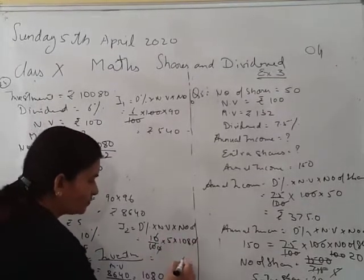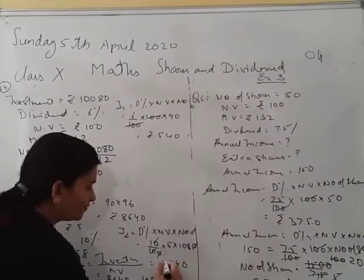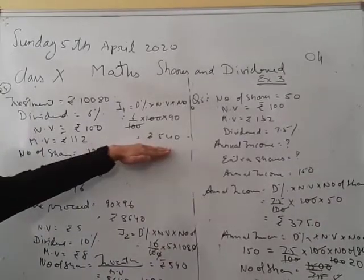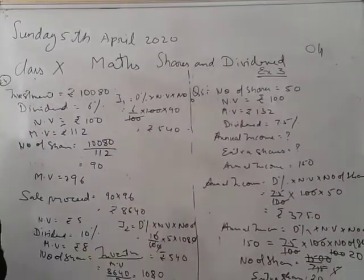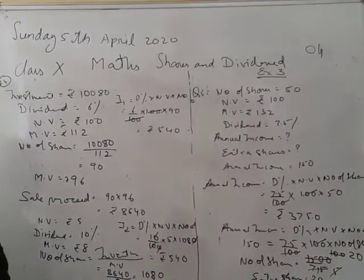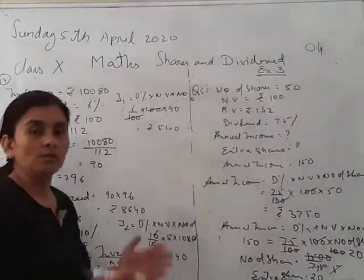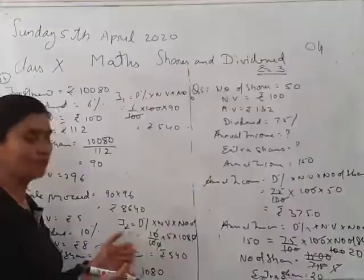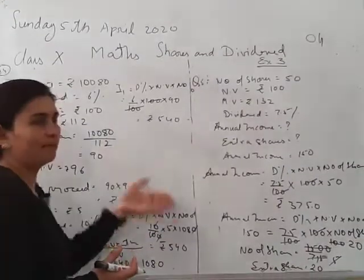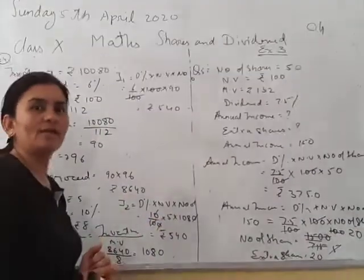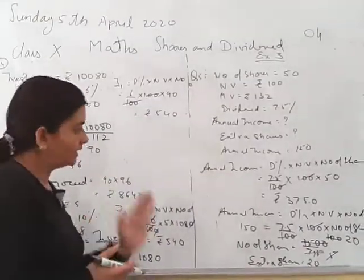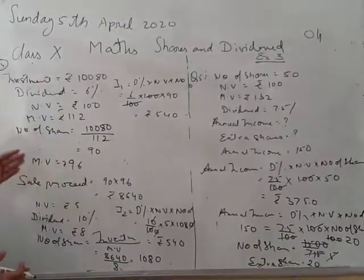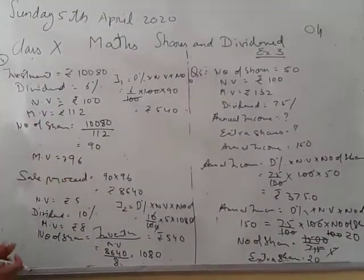Similarly, income for the second company (I2) equals 10 by 100 into nominal value 5 into number of shares 1080. Simplifying this gives Rs.540. So for the first company income is 540 and for the second company income is also 540. There is no change in annual income. Both companies give the same annual income of Rs.540.